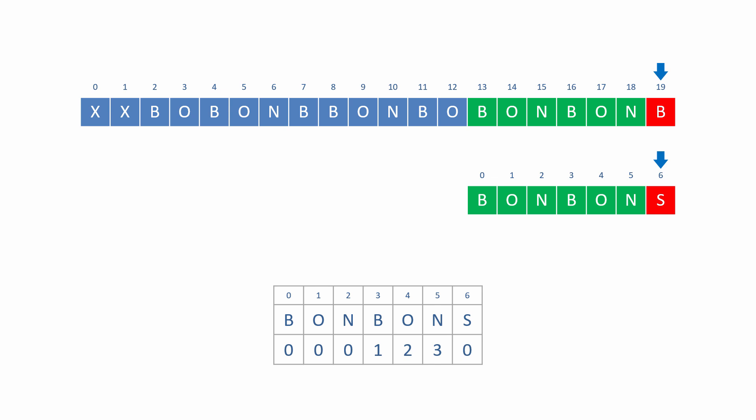Now that you know exactly what information about the structure of the pattern is captured before the search begins and how it is used during the search, you can start to think about how to implement the pattern pre-processing phase. In the next lesson, you'll learn how to generate the partial match table for any pattern programmatically. And in the lesson after that, you'll learn how to write a complete KMP search. Thank you very much!